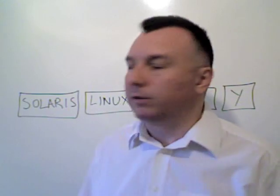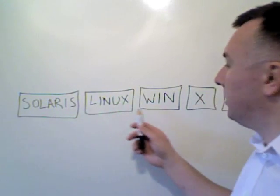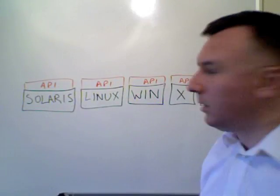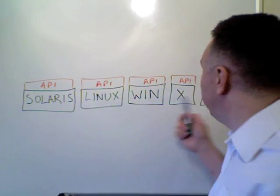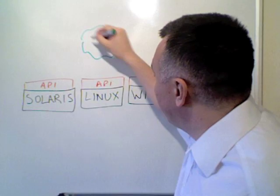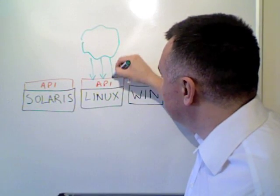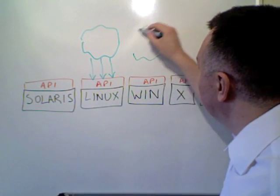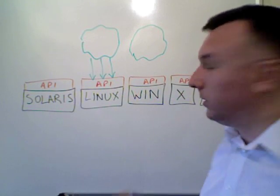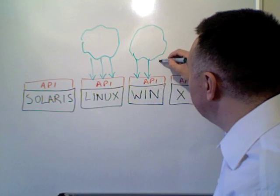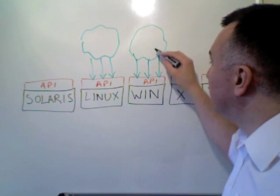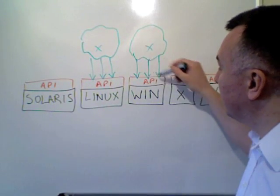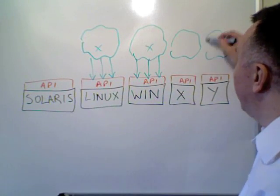Well the problem is there are a number of different platforms. Sometimes they have different hardware, always they have different operating systems. On each of these operating systems there is an API — you write your program up here and talk to the API. Which is fine, except that when you want the same program to run on a different operating system, the API is different. So you have to modify your code in order to make it work with the new API, and again on this platform and again on this platform.